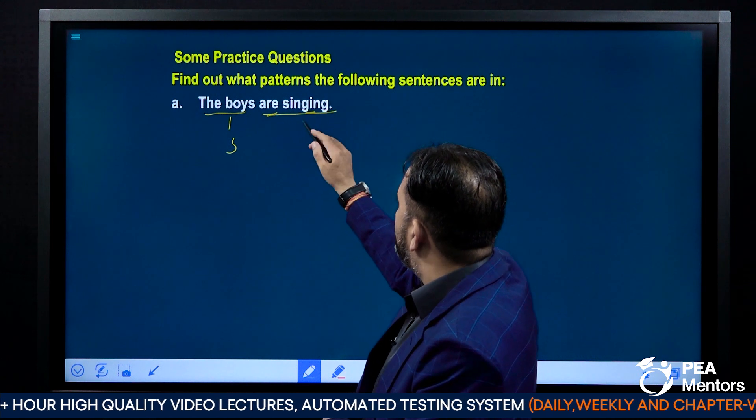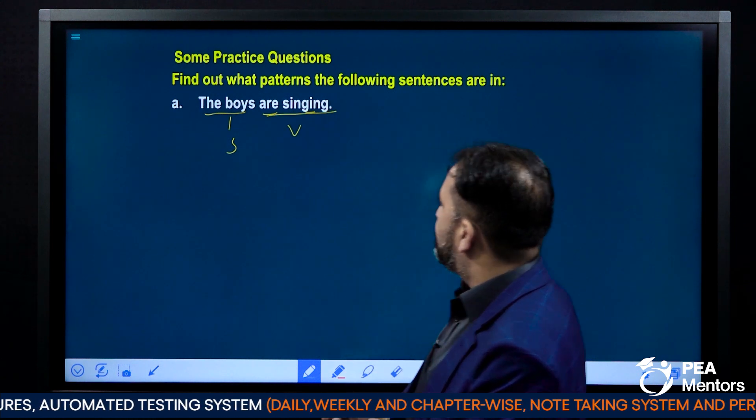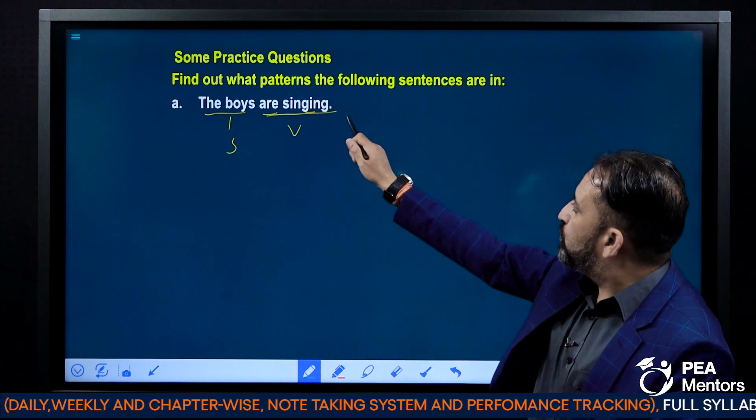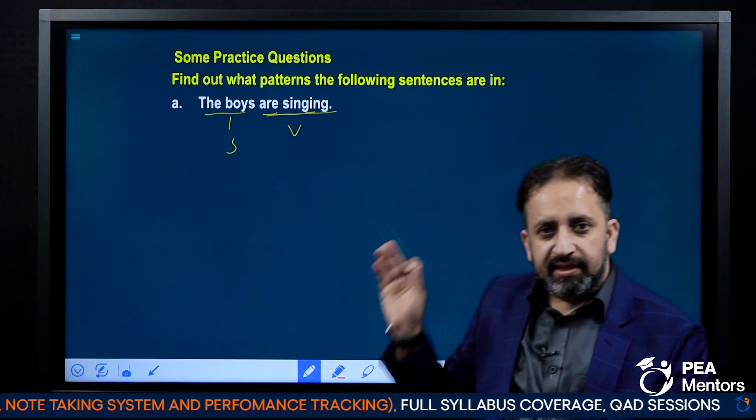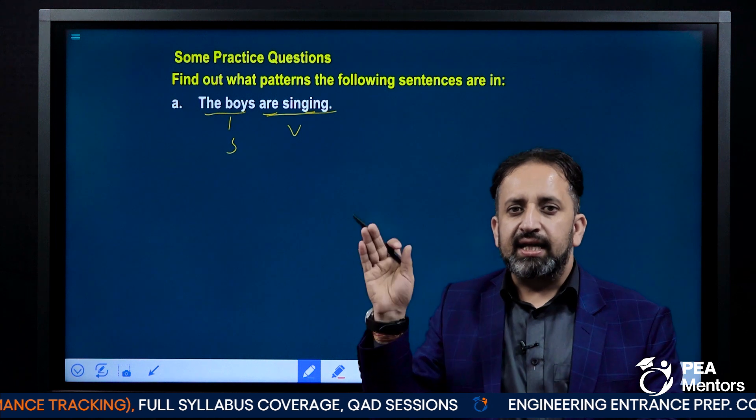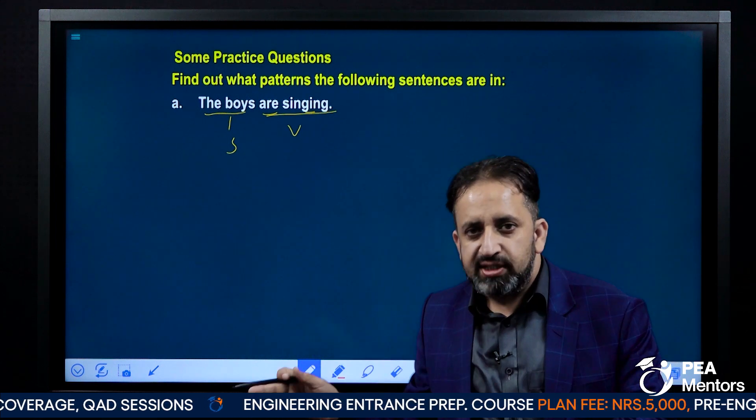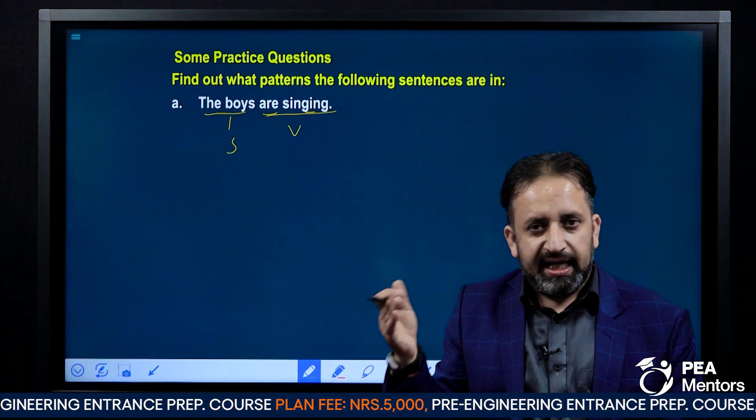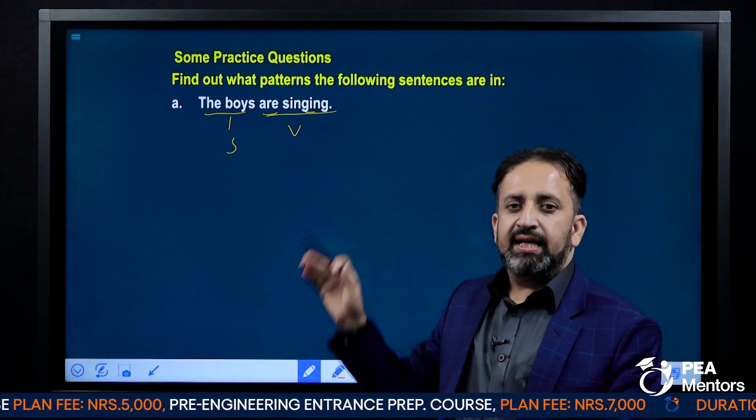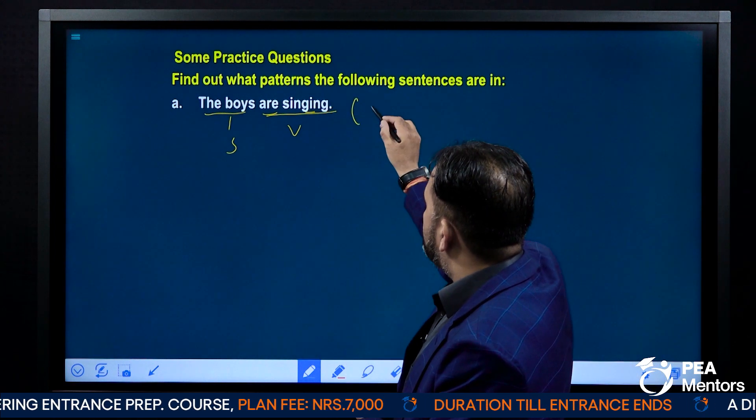Both of them form a verb. Now we don't have anything there, so in this sentence singing is an intransitive verb. It has been used as an intransitive verb. That means this sentence has got subject plus verb pattern.